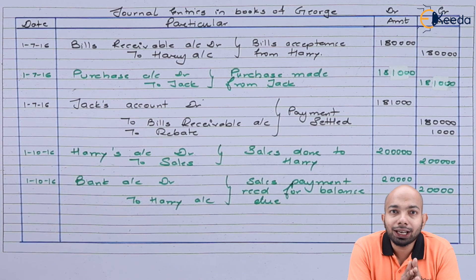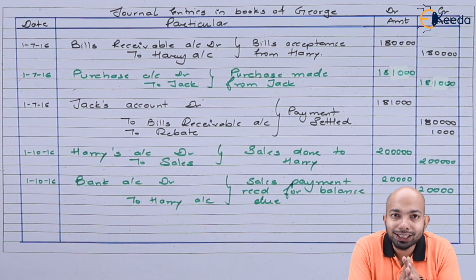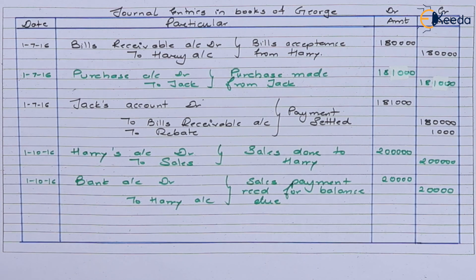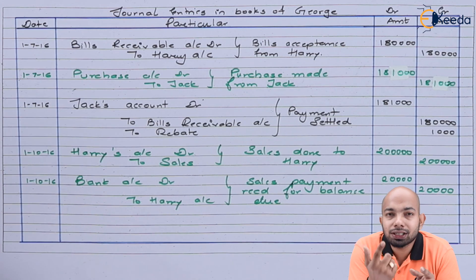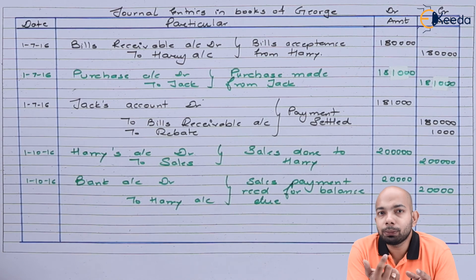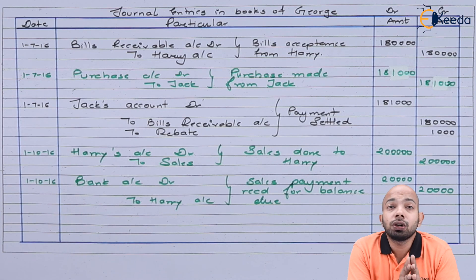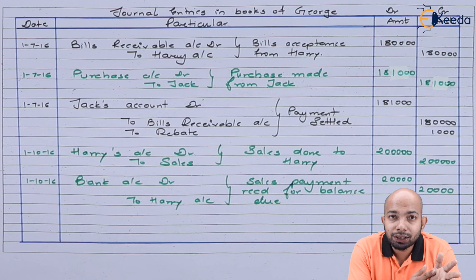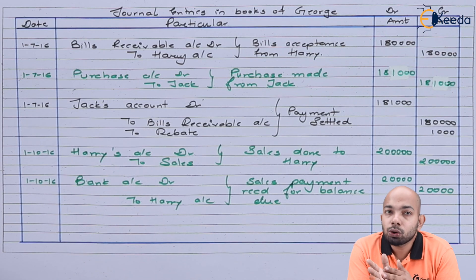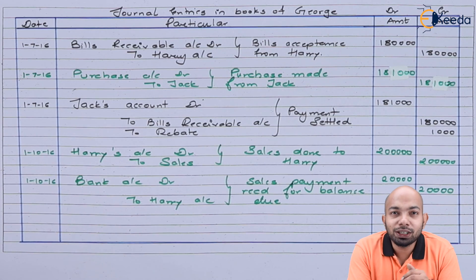I hope this video gave you clarity on how to solve accommodation of bill problems when more than two parties are involved. The journal entries here covered two parties, but the bill of exchange revolved around several people — this is accommodation of bill where finance has been raised and other requirements met. Thank you for watching; stay tuned with Ikida and keep subscribing.